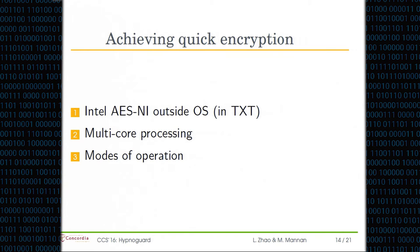To achieve prompt full memory encryption, several factors must be considered. First, we make use of the AES-NI instruction set for hardware acceleration. It must be done natively in TXT. We also make full use of all CPU cores through multi-core processing. The mode of operation matters as well, which I'll explain shortly.